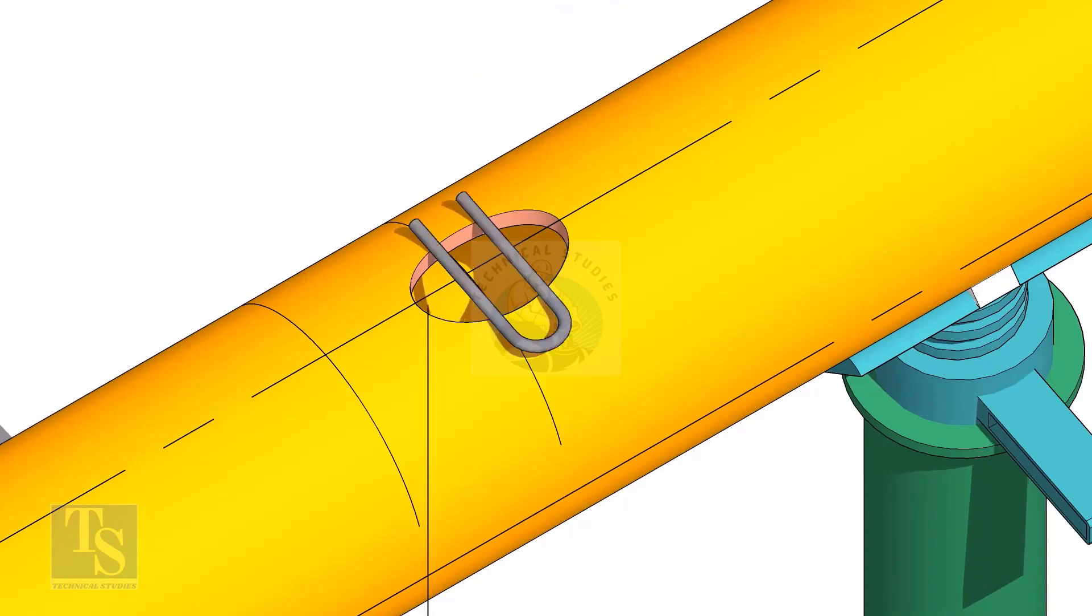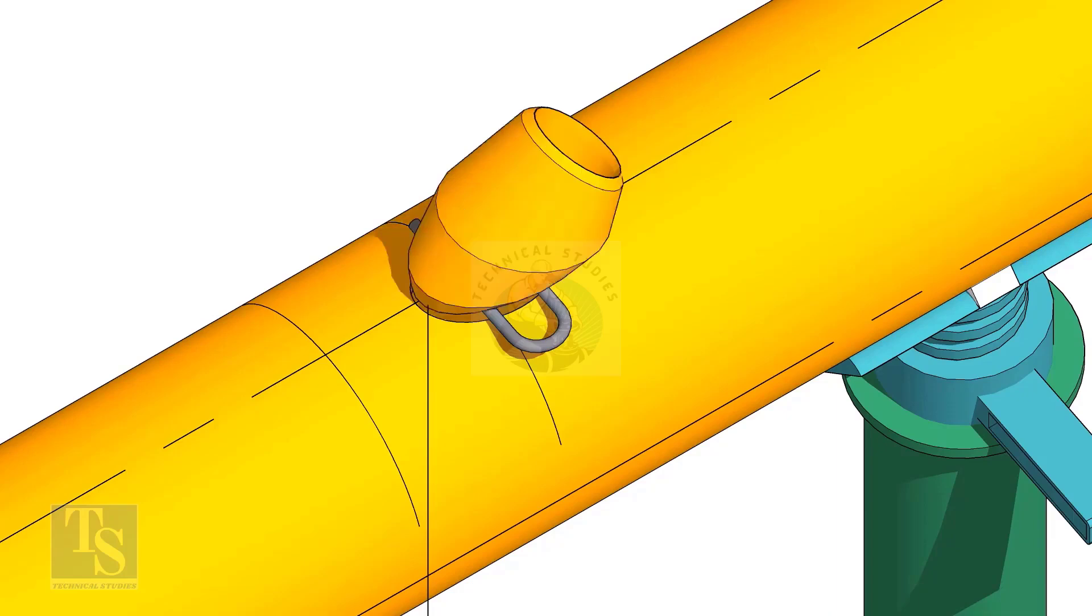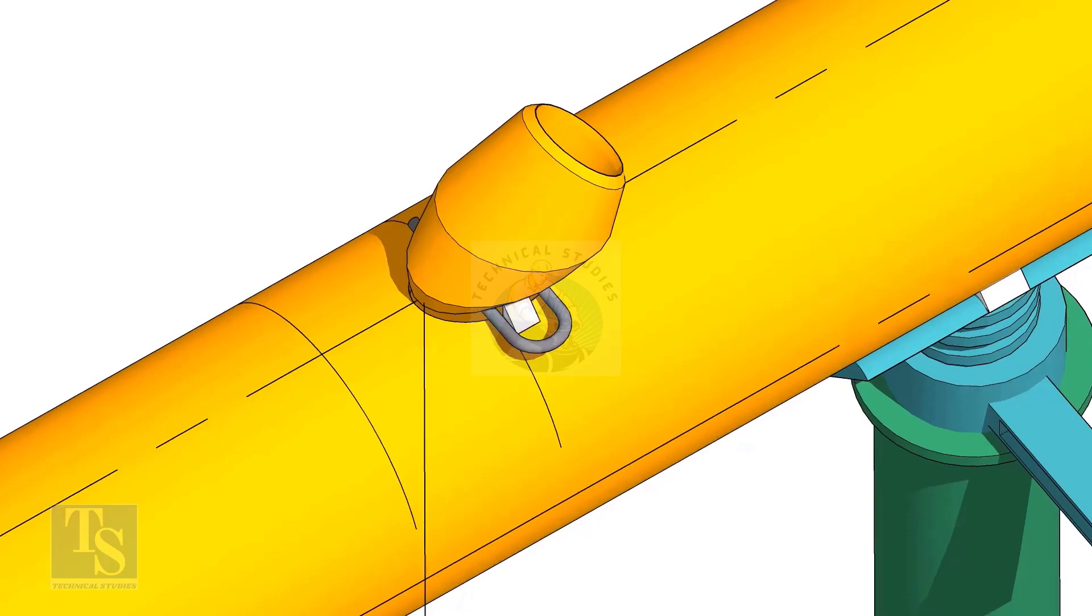Cut and clean the opening on the header. Put the laterolette on the center of the hole. Tack weld on one side.